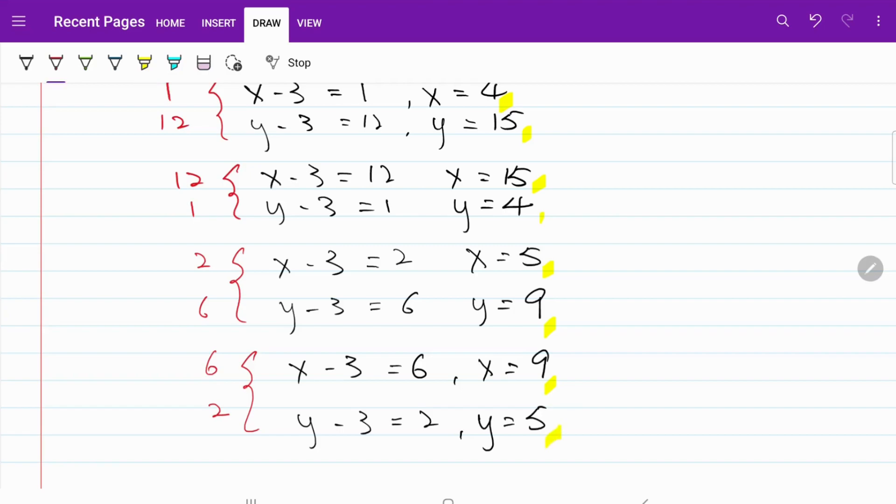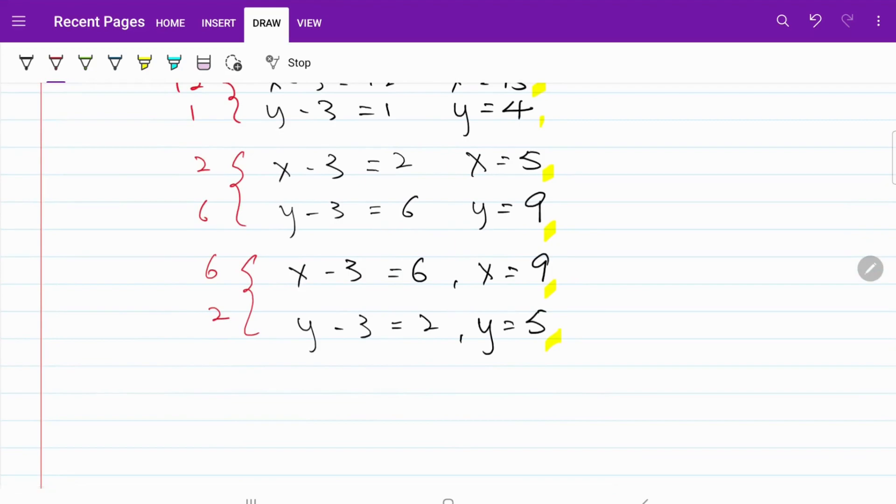Let's move on to our final combination. I have x minus 3 equal to 3, x is equal to 6, y minus 3 equal to 4, y is equal to 7.